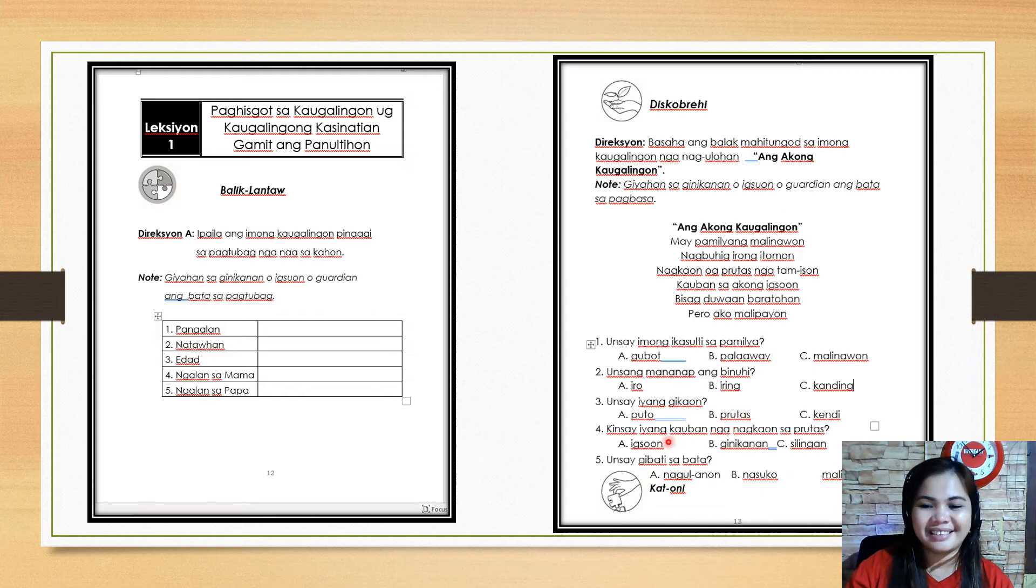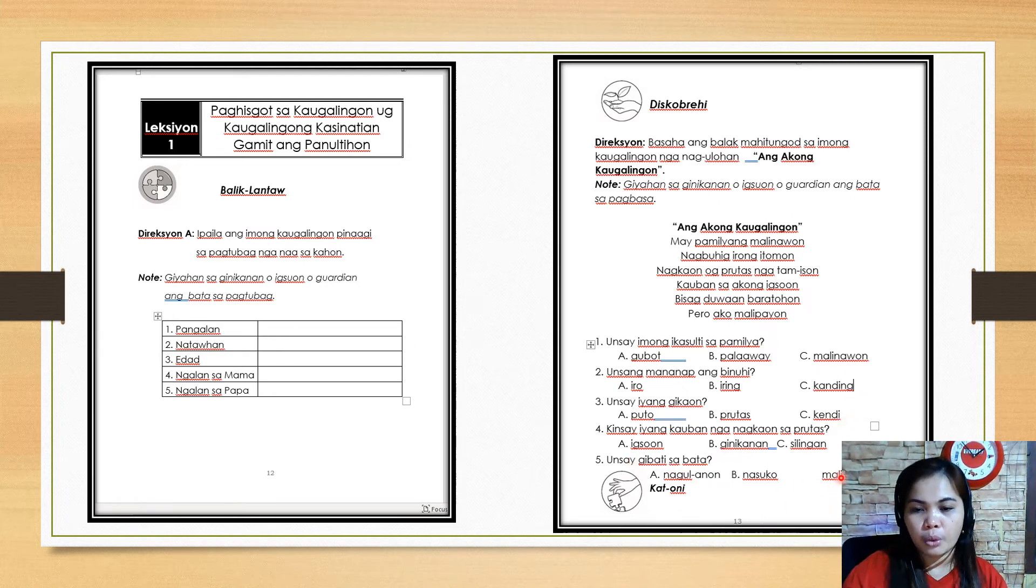Letter A: puto. Puto is a rice cake. Letter B: prutas or fruits. Letter C: candy. Next number four: who is its companion to eat the fruit? A: igsoon or sibling. B: gini kanan or parents. C: silingan or neighbor.